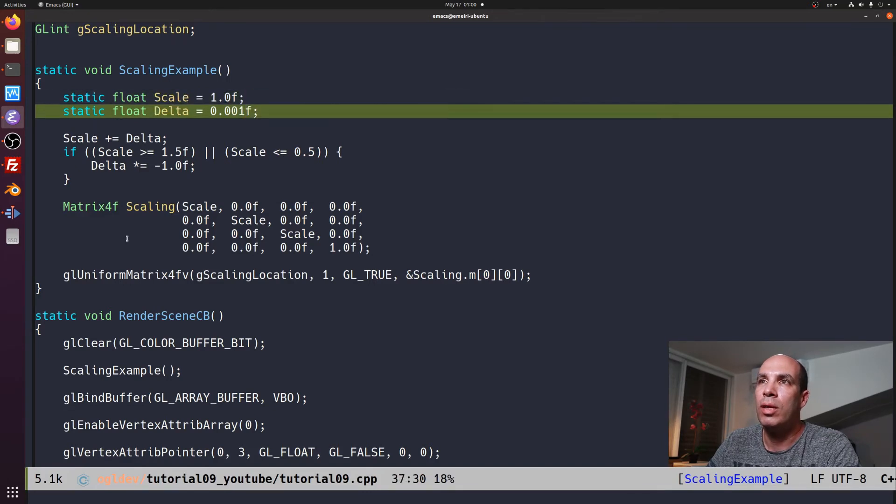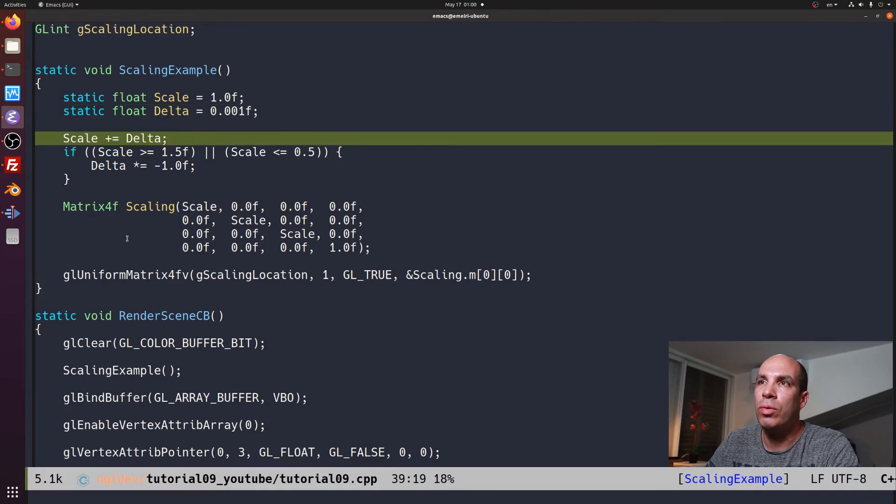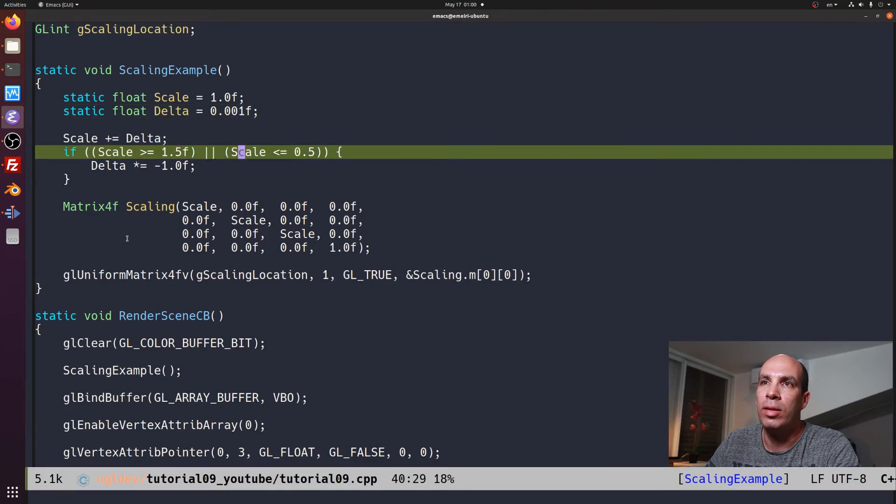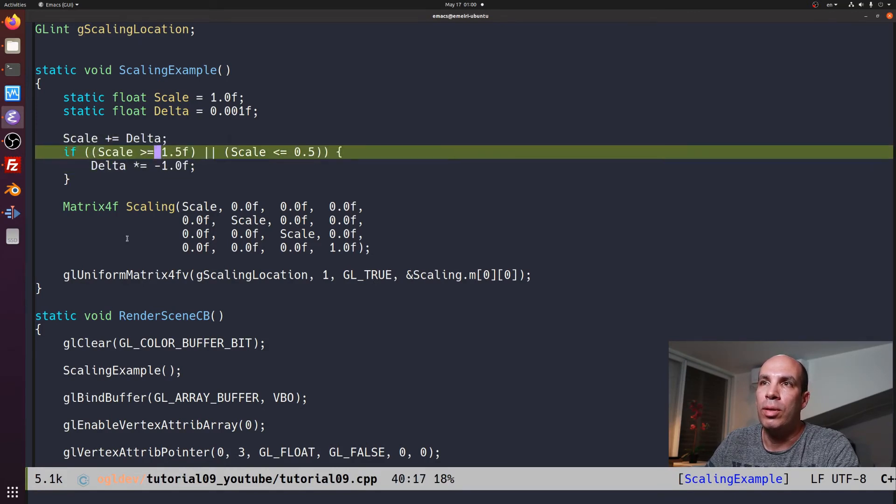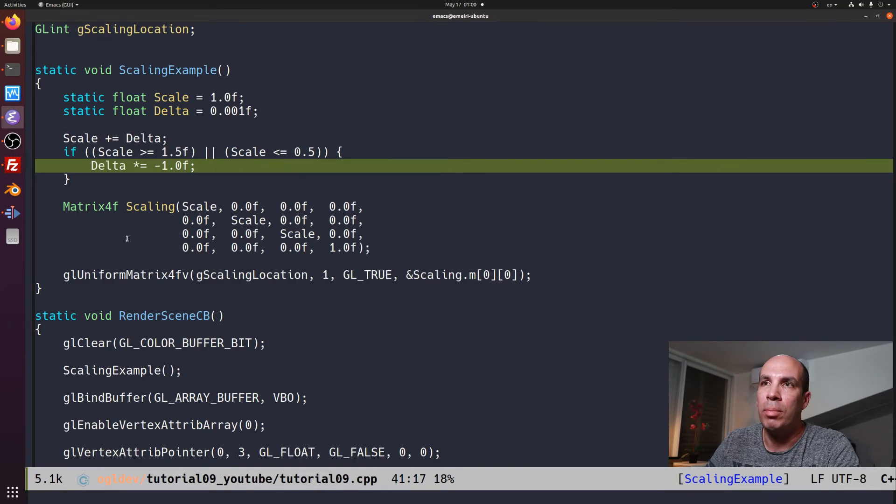The scale is initialized to 1 here, and we have a delta which is 0.001. We add the delta to the scale, and when the scale goes below a half or it goes above 1.5, we change the direction of the delta by multiplying it with minus one. So that's basically it. Again, just see the previous video.